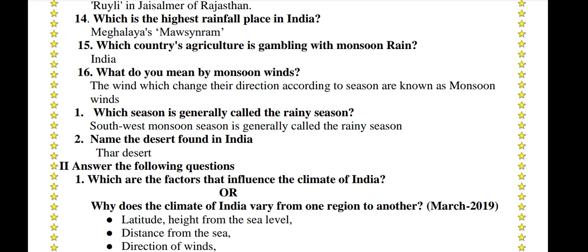Which country's agriculture is a gambling with monsoon rain? India. What do you mean by monsoon winds? The winds which change direction according to season are known as monsoon winds. Which season is generally called the rainy season? Southwest monsoon season. Name the desert found in India. Thar Desert.